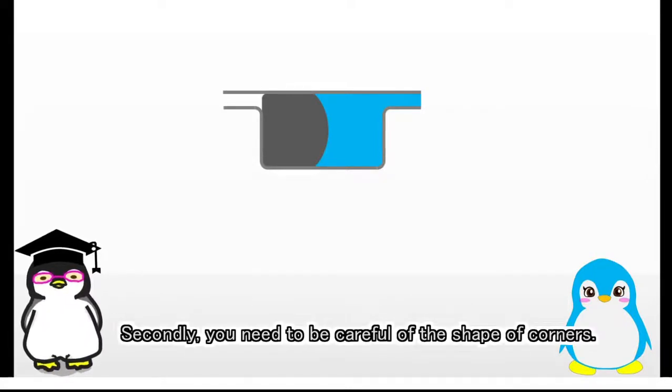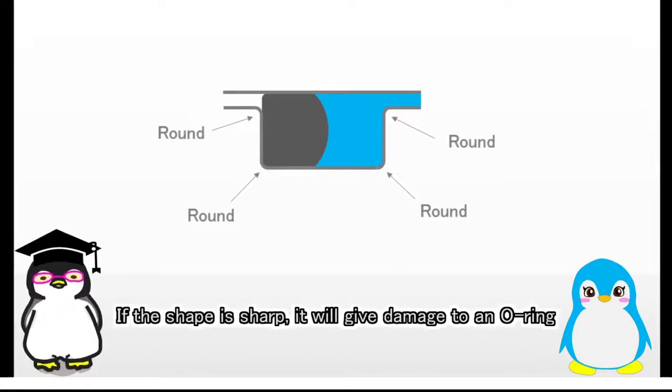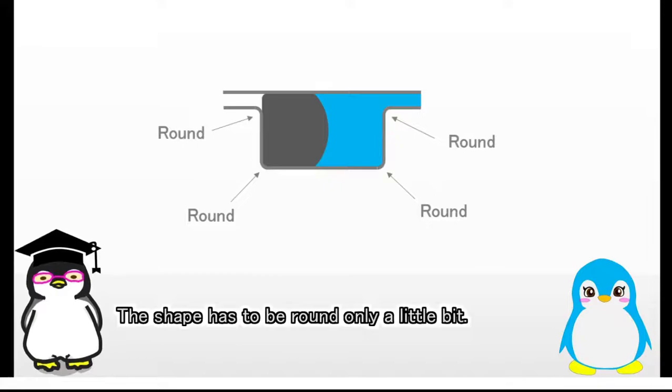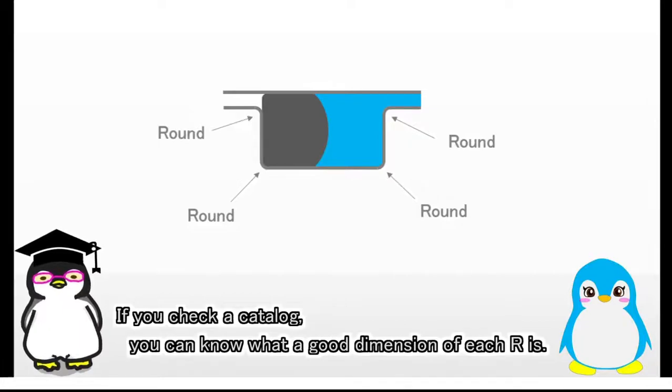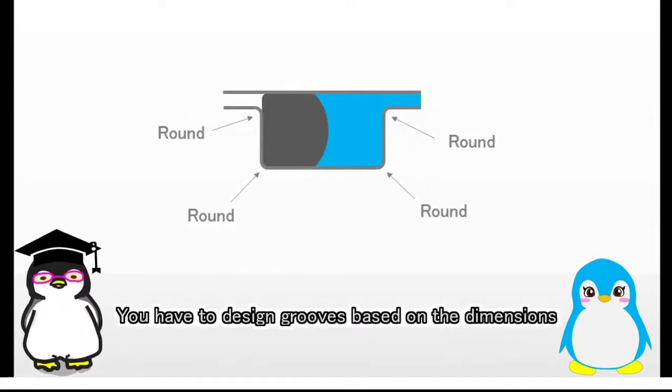Secondly, you need to be careful of the shape of corners. If the shape is sharp, it will give damage to an O-ring when the pressure becomes high. The shape has to be round only a little bit. If you check a catalog, you can know what a good dimension of each R is. You have to design grooves based on the dimensions on a catalog.